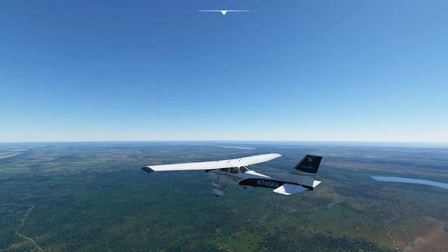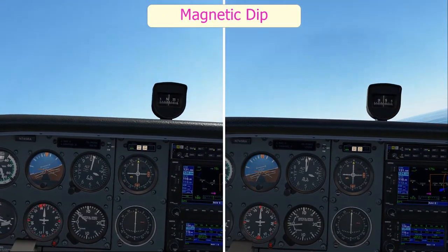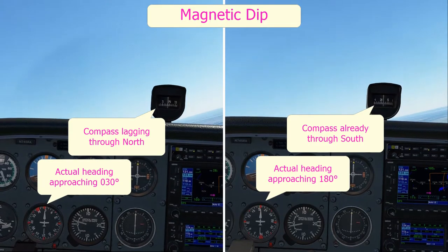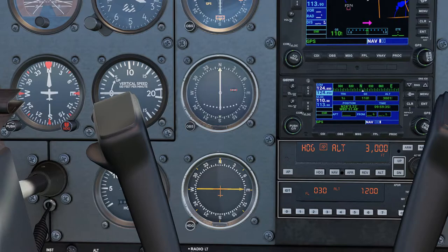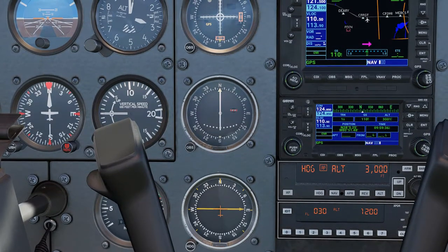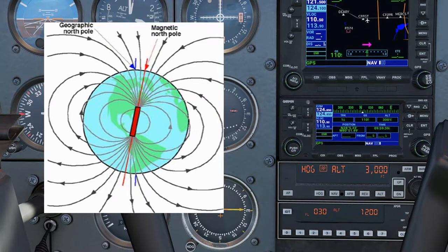This is a question about a compass turning error which is caused by a phenomenon called magnetic dip. This causes the compass to lag through north and lead through south. A major contributing factor to this error is the aircraft's latitude as the Earth's lines of magnetic flux become more vertical with increasing latitude.